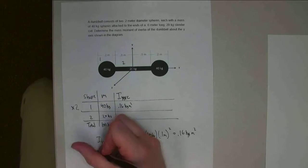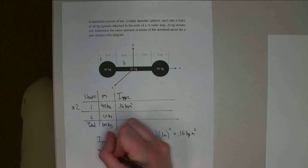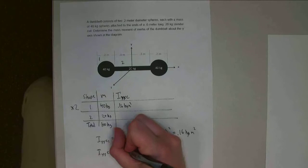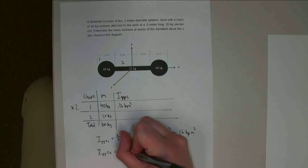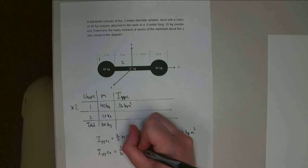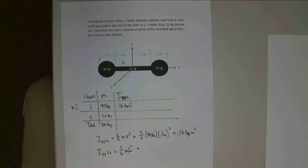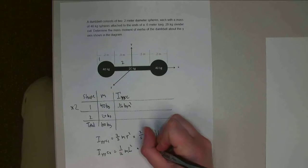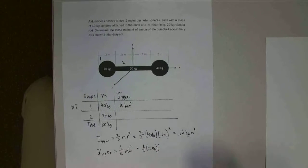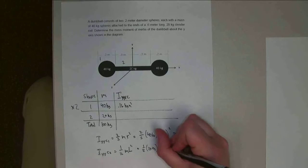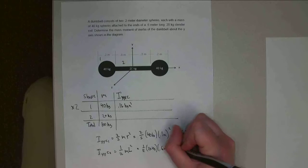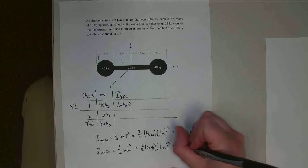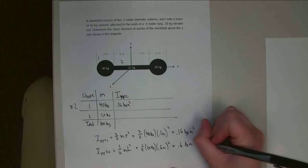All right, and so Iyyc2, if I look this one up in my tables, I get the equation 1 twelfth m l squared. All right, so this center rod is 20 kilograms, so 1 twelfth times 20 kilograms times the length of the rod is 0.6 meters. And that gets squared. All right, so that value, this is going to be 0.6 kilogram meter squared.